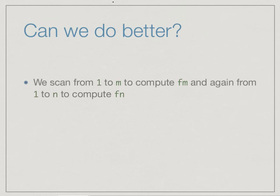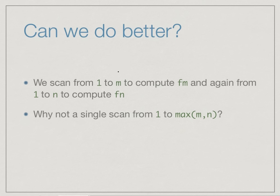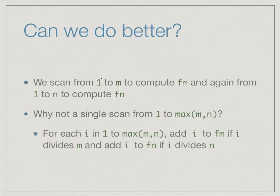So can we do better than this? The way we have proceeded, we first scan all numbers from 1 to M to compute Fm, and then again from 1 to N to compute Fn. An obvious improvement is to just directly scan the numbers from 1 to the larger of M and N, and in one scan compute both lists Fm and Fn. For each i from 1 to the maximum of M and N, we check if i divides M — if so, add it to Fm — and then check if i divides N — if so, add it to Fn. So instead of two separate scans, we do it in one scan.